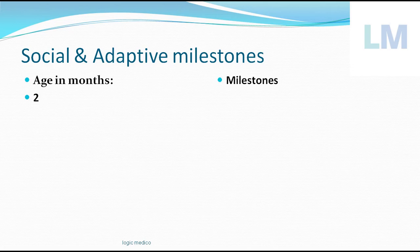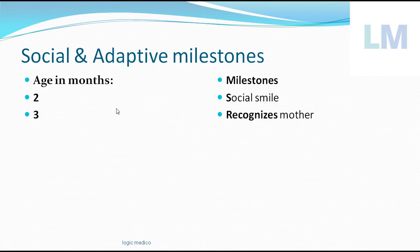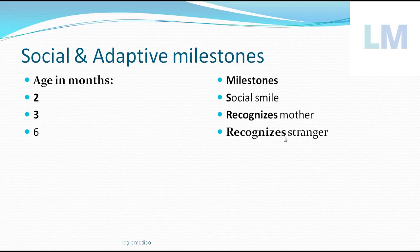At two months of age, the child shows a social smile — if you flip the number two it appears like a smile. At three months of age, the child recognizes the mother — it knows who the mother is among other females in the home and will be comfortable with her. To remember: the number three, if flipped, looks like a symbol suggesting recognition. At six months of age, the child recognizes strangers, leading to stranger anxiety — when the mother holds the child it is comfortable, but when a stranger approaches, it starts crying.